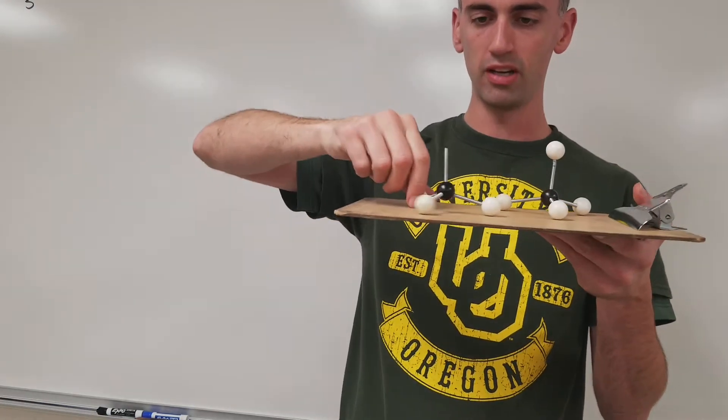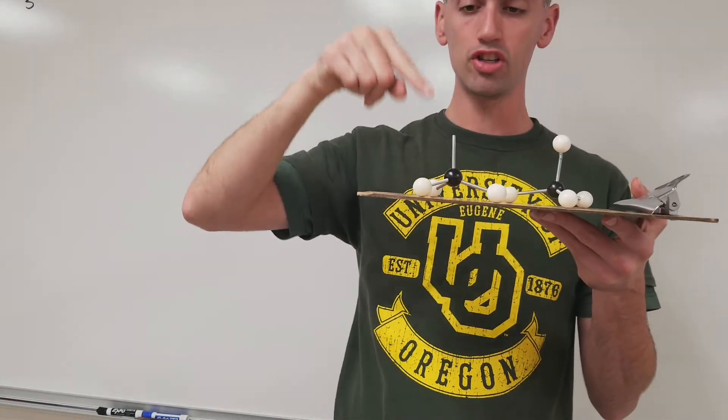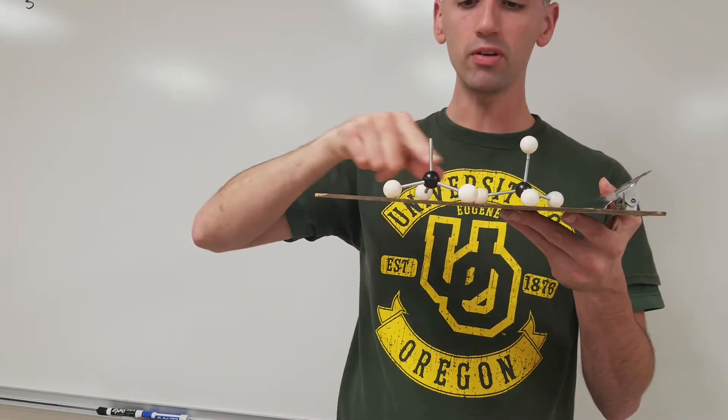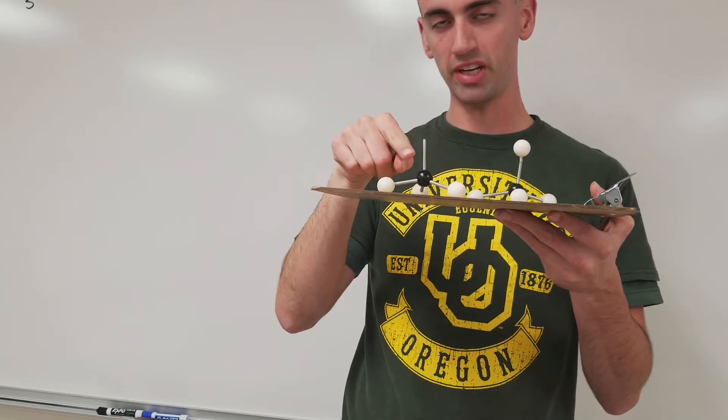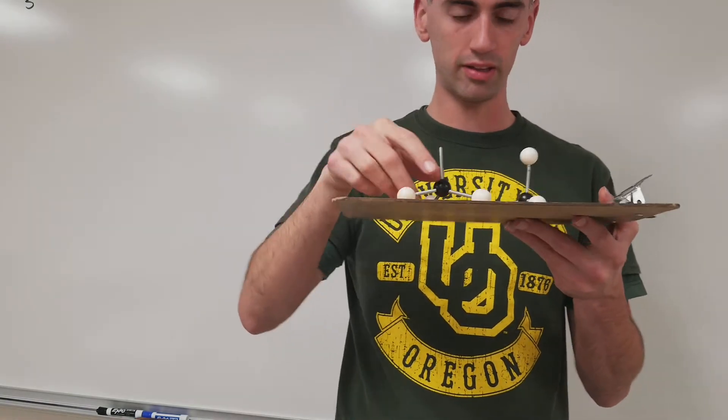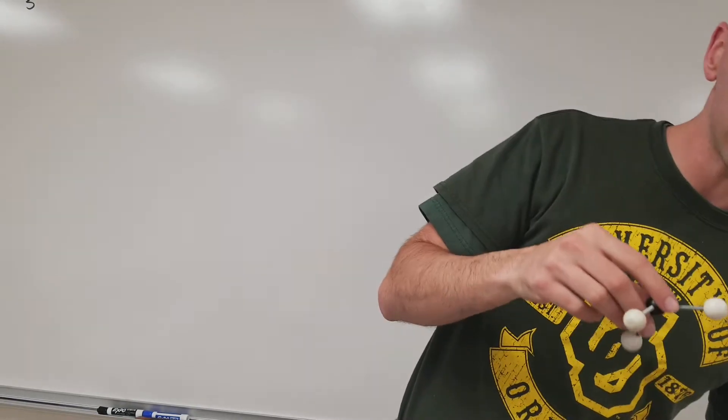Kind of like a little three-sided pyramid. So we're going to call it trigonal pyramidal. So even though these have the same electron geometry, they have different molecular geometries. And this sort of thing can hold up in regards to changes.